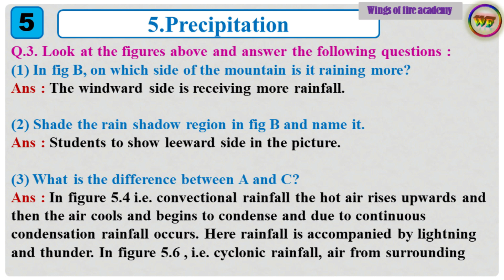Question 3: Look at the figure above and answer the following questions. 1. In figure B, on which side of the mountain is it raining more? Answer: The windward side is receiving more rainfall. 2. Shade the rain shadow region in figure B and name it. Answer: Students to show leeward side in the picture.